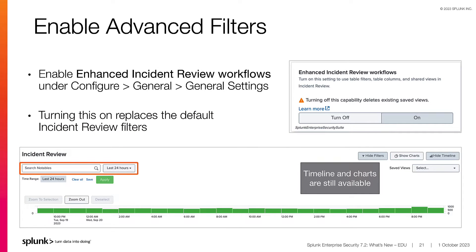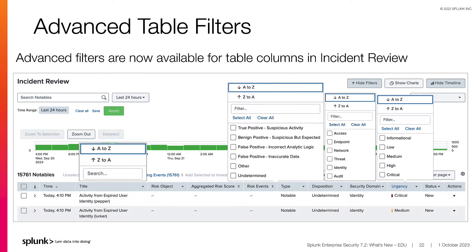To enable the Advanced Filters, navigate to the ES Configure menu and select General, General Settings, and turn on the Enhanced Incident Review Workflows. When enabled, the filters along the top of the incident review window are replaced with a keyword search box and a time range picker. The filters are now available on each column header in the Notables list. The timeline and the charts are still available, though the charts are hidden from the examples shown here. Here we see the filters on each column. You can sort the column alphabetically, search for a keyword, or in some cases select individual options as shown in the Disposition and Security Domain filters.